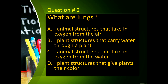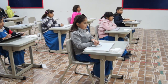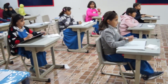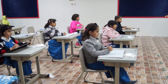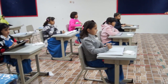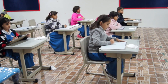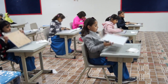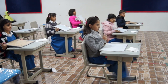Time start now. Question number 3: What are lungs? Letter A, animal structures that take in oxygen from the air. Letter B, plant structures that carry water through a plant. Letter C, animal structures that take in oxygen from the water. And letter D, plant structures that keep plants their color.